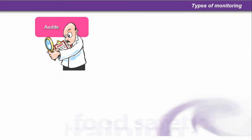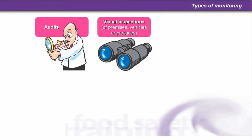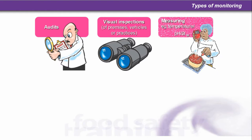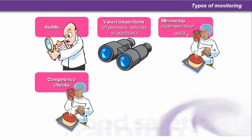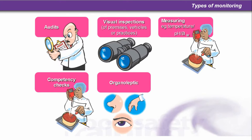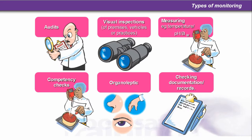Types of monitoring include: audits; visual inspections of premises, vehicles or practices; measuring — for example temperature, pH, acidity, humidity or moisture; competency checks; and checking documentation and records.